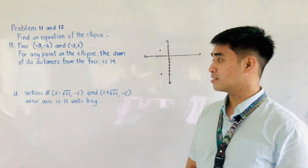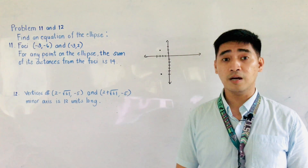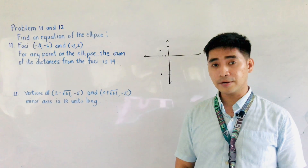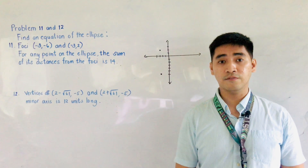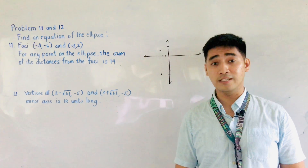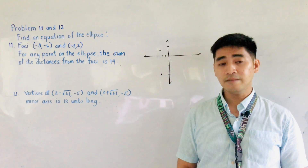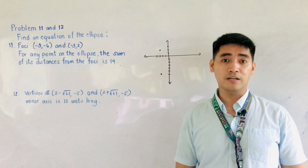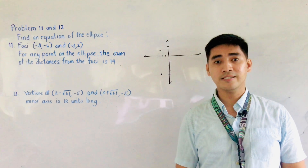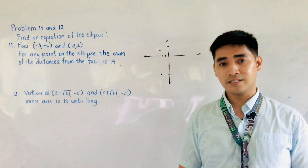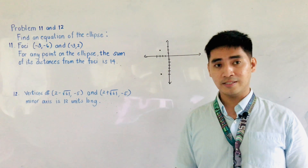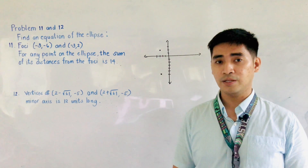Before I discuss these examples, I'd like to remind you of some important facts about an ellipse. Always remember that the midpoint of the endpoints of the vertices, the foci, and the co-vertices is just the center. If you are given endpoints of the vertices, the foci, and the co-vertices, all you have to do is get the midpoint of those endpoints and that is the center.